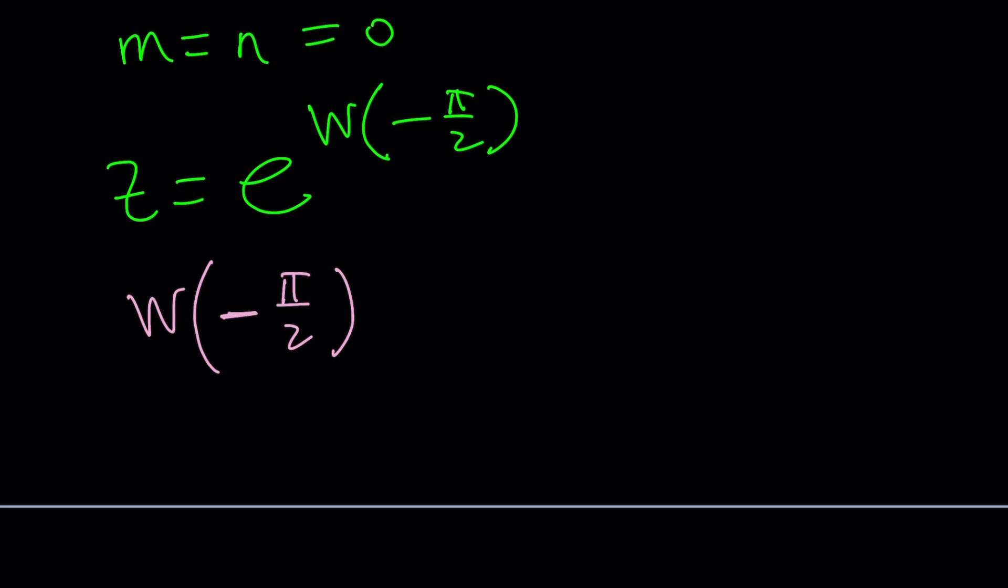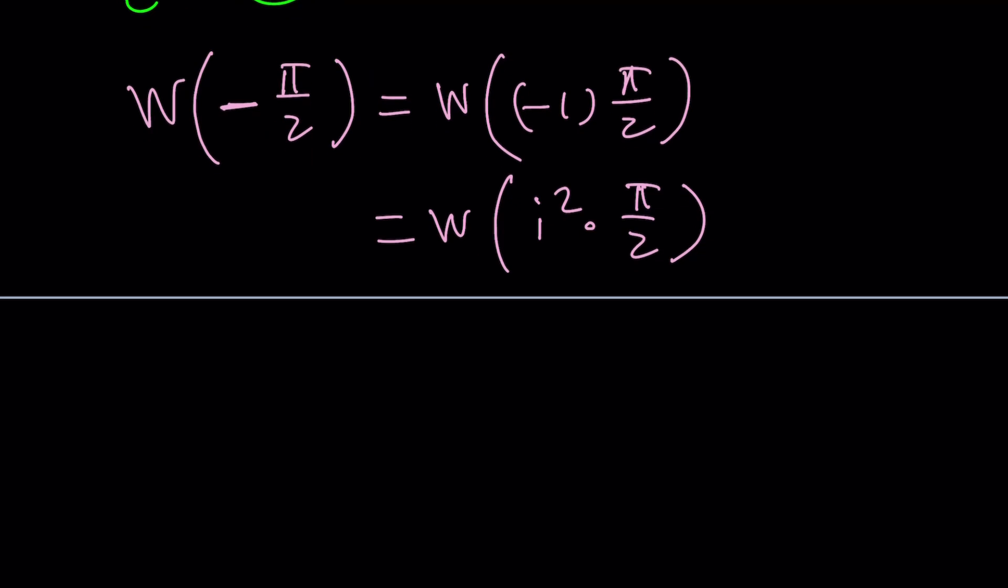So, to be able to do this, I need to put it in the form t e to the t. And guess what? I can do it. First of all, write this as negative 1 times pi over 2. And then write the negative 1 as i squared. Isn't that amazing? Every time we see i squared, we replace with negative 1. And sometimes when we see negative 1, we must replace with i squared because it's fun. Actually, it'll do the work. That's why. So, now notice that I can separate these guys as i times i pi over 2.